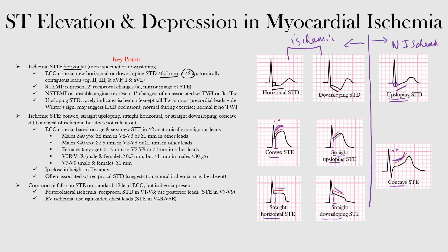Other features of ischemic ST elevation include a J point that is close to the height of the T wave apex. The J point is where the ST segment begins. If it is raised to approximately the same level as the T wave apex, that may indicate ischemia — as seen with horizontal ST elevation where the J point is roughly at the same height as the T wave peak.